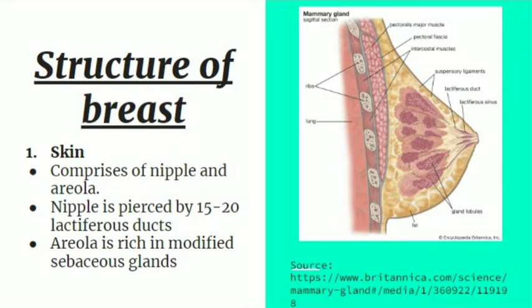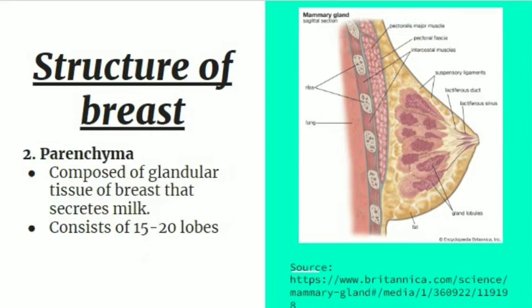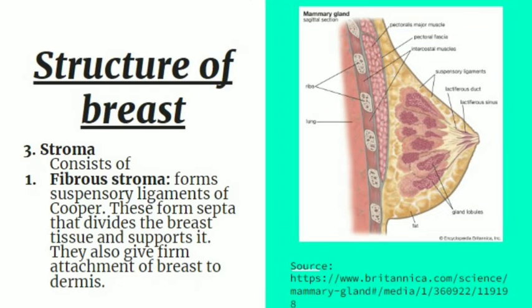The areola is rich in modified sebaceous glands that produce a secretion called sebum. The parenchyma is the functional tissue of the breast, composed of mammary glands. This glandular tissue secretes milk and is composed of 15 to 20 lobes.